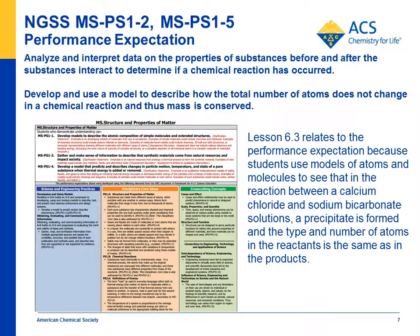If you're in an NGSS state, there are two performance expectations that apply to this lesson: MS-PS1-2 and MS-PS1-5. MS-PS1-2 says analyze and interpret data on the properties of substances before and after the substances interact to determine if a chemical reaction has occurred. MS-PS1-5 is develop and use a model to describe how the total number of atoms does not change in a chemical reaction and thus mass is conserved. Lesson 6.3 works for both of these, since students look at the solubility of the reactants before and after interaction, determine they're different, and therefore that a chemical reaction occurred. Students also look at the equation and see that the type and number of atoms in the reactants equals those in the products, confirming mass is conserved.